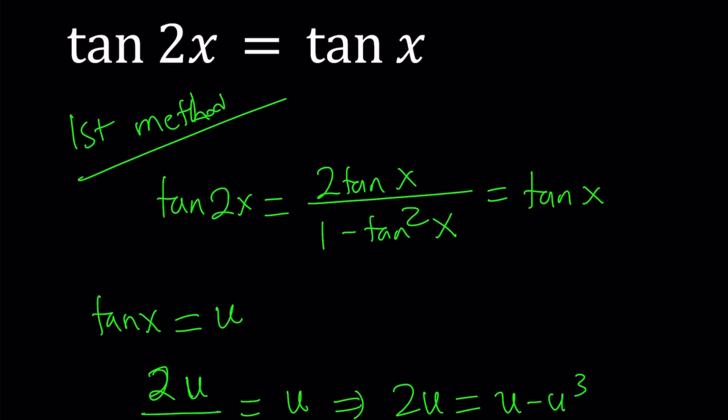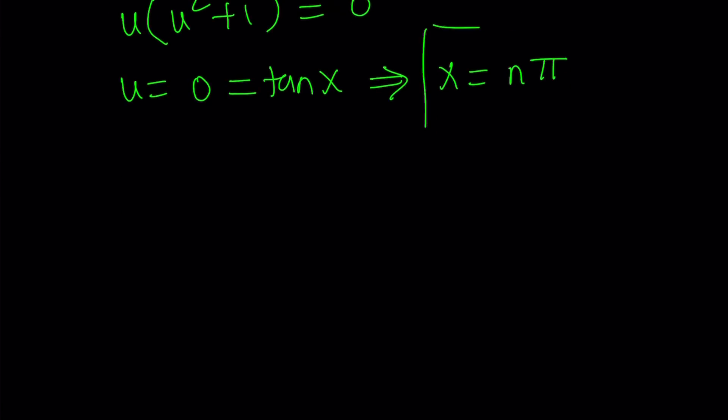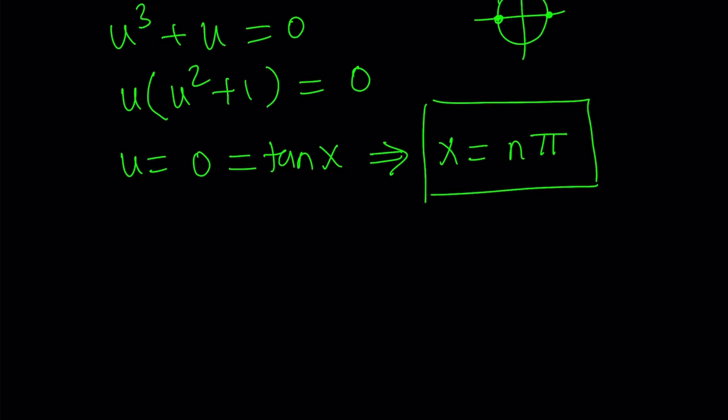Now if you think about the original problem, go ahead and plug in pi, for example. Tangent 2 pi is 0, tangent pi is 0. You can plug in any number from this interval, and you're going to get the solution. So that's the trivial solution, the real deal. Let's go ahead and take a look at the other factor, which is more interesting.